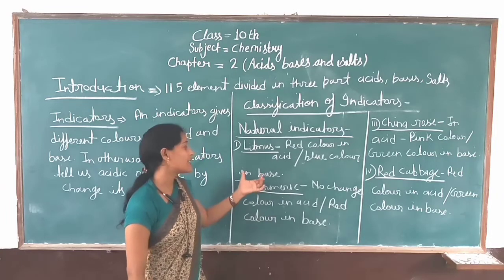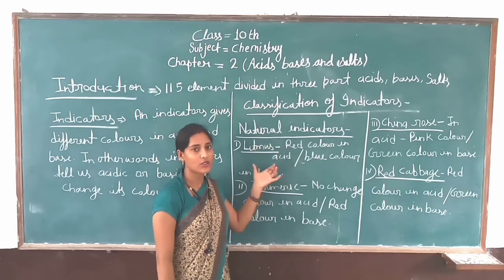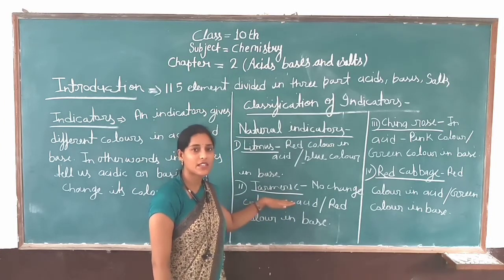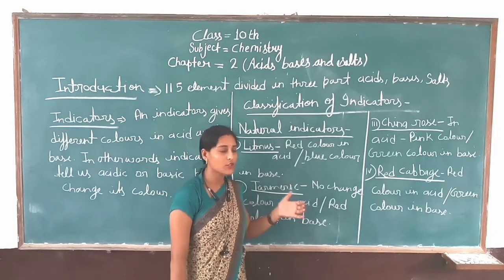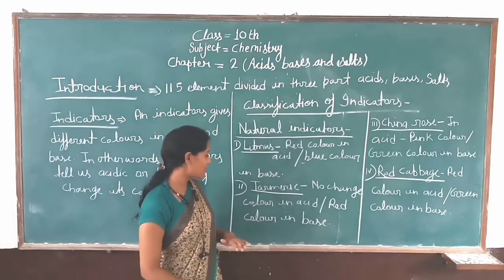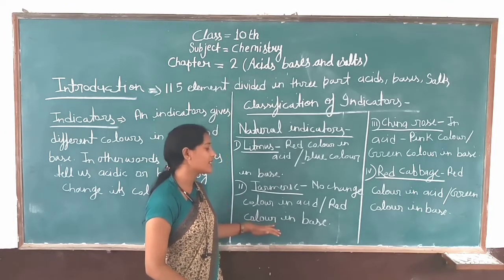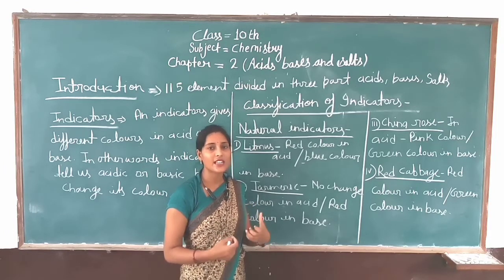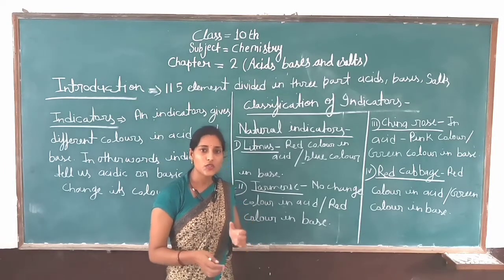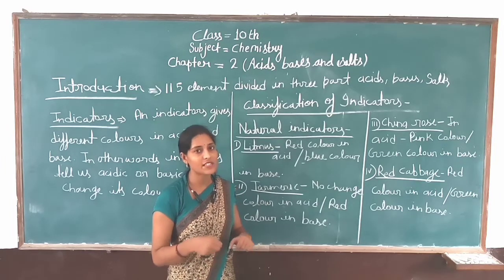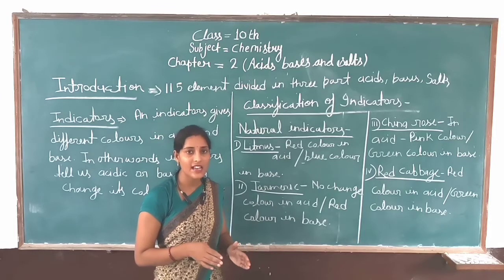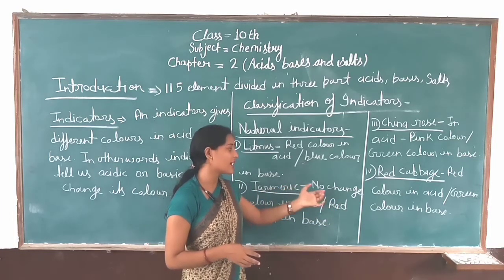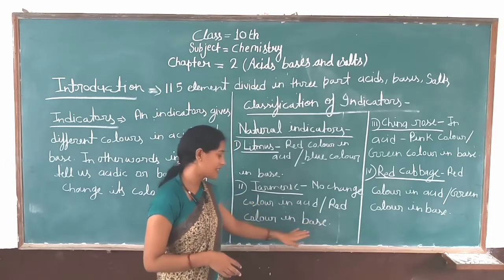Litmus paper: if solution is acidic, then red color; if basic, then blue color. Next is turmeric. We all know what turmeric is. If the solution is acidic, then turmeric shows no color change. If our solution is of basic nature, then we will get a red color. For example, when we add detergent to our cups, the color turns red because detergent is of basic nature. So turmeric in acid gives no color change, and in base it gives red color.